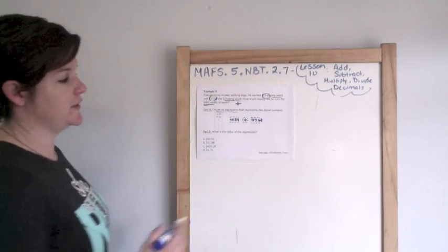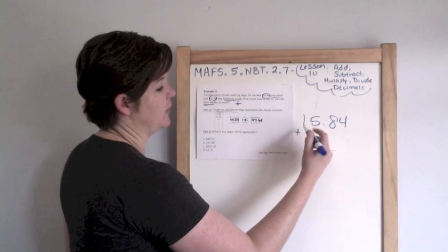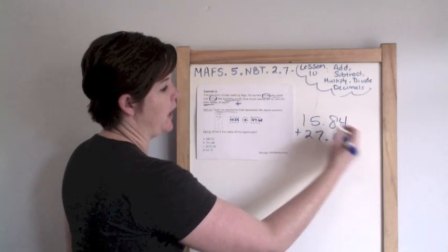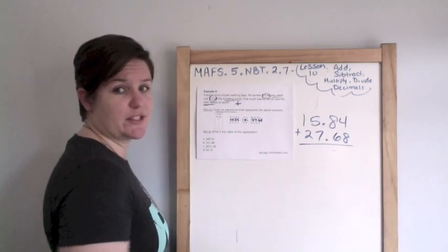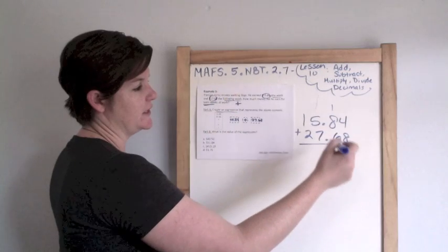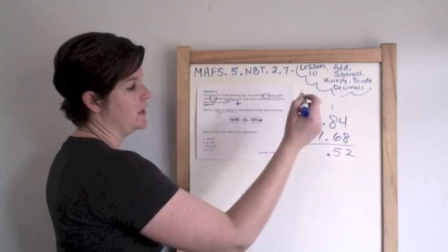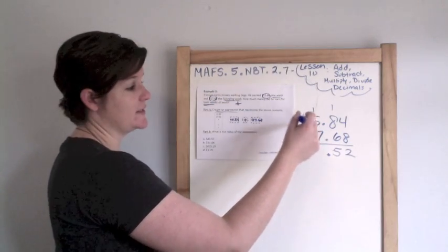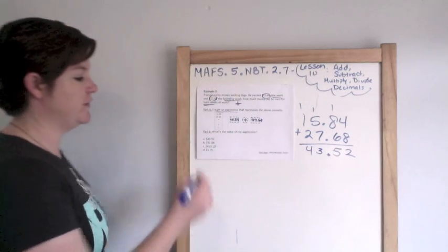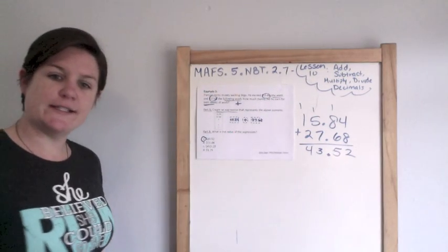What is the value of this expression? Well, let me make this a little bit bigger. So if I'm adding them together, I would not do it horizontally, obviously. 4 plus 8 is 12. That would be 1 plus 8 is 9. 9 plus 6 is 15. My brain is working too fast. 1 plus 5 is 6. 6 plus 7 is 13. And that would be $43.52. So what's the value? It would be A.